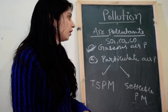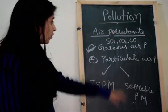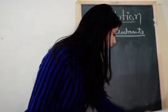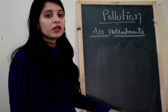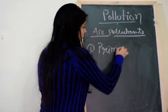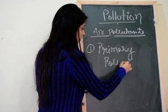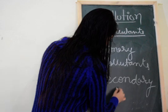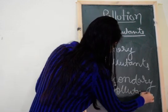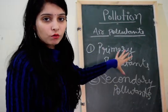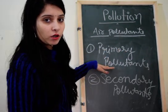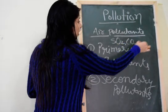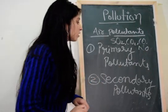On the basis of their origin, air pollutants can be divided into two types: primary pollutants and secondary pollutants. Primary pollutants are those which are directly emitted from the source. Examples of primary pollutants are sulfur dioxide, carbon dioxide, carbon monoxide, and nitrogen oxide.